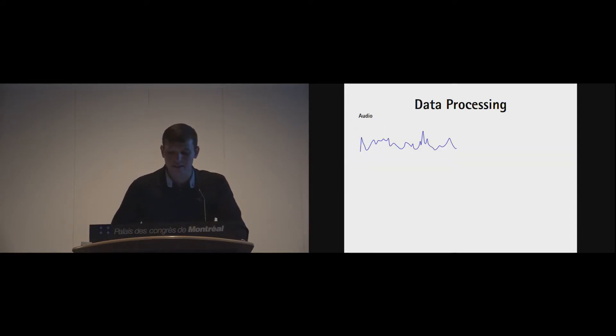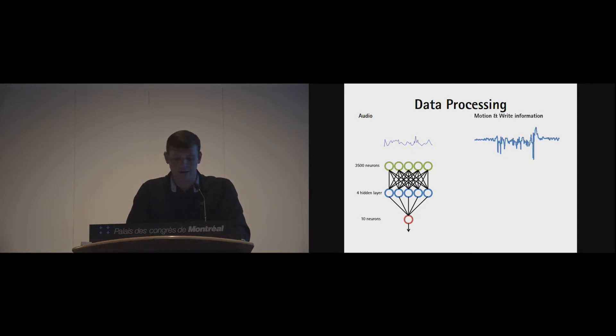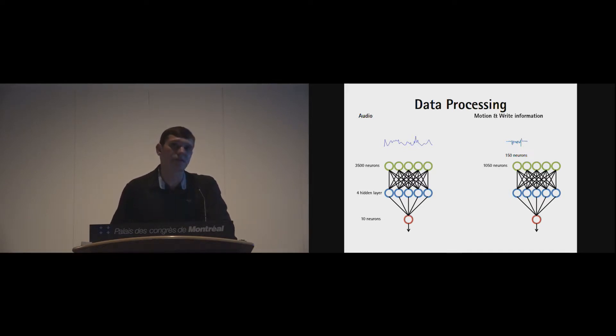Then we wanted to process these data for neural networks. We decided to use 3,500 input neurons, because this is related to the sampling rate of the pen. We stretched our envelope down to the network and processed it through four hidden layers with a decreasing structure. For motion, we're doing quite the same approach. We simply downsample the incoming data to 150 neurons for each axis, and then also take the write information sensor and process them through our neural networks with three hidden layers and a decreasing structure.